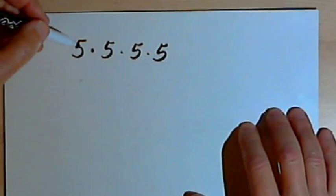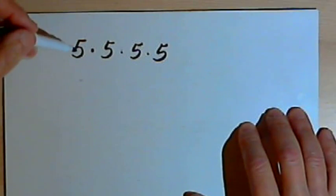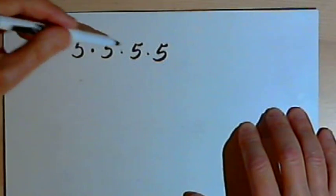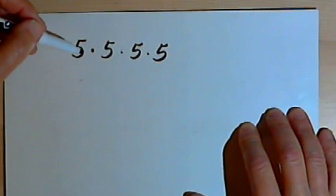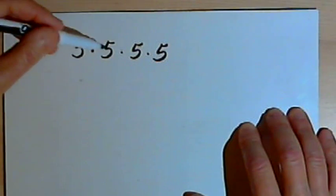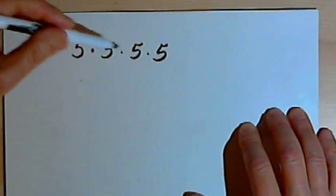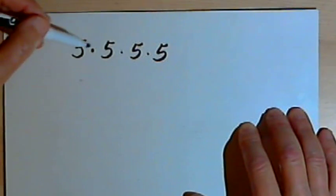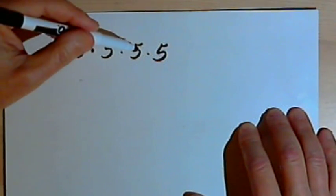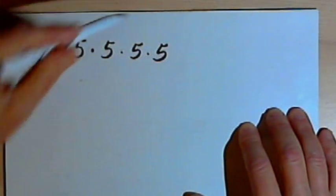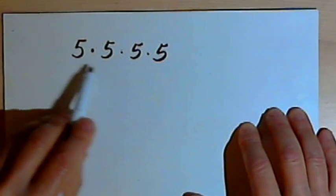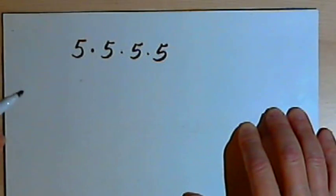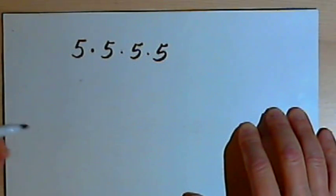Let's say I've got a situation where I've got the number 5 and I want to multiply it by itself 4 times — 5 times 5 times 5 times 5. I could write it out like this, or I could use exponents and write it in a much simpler manner.